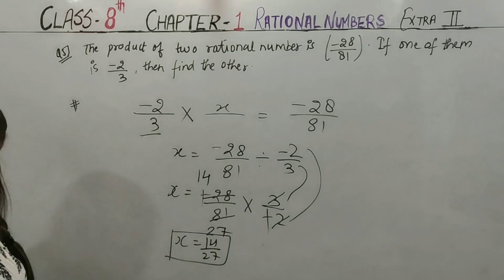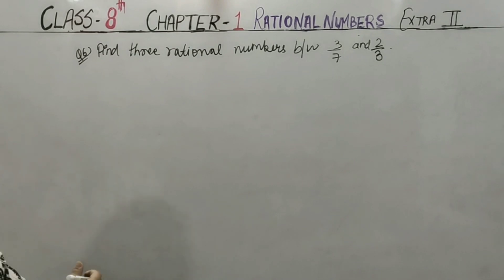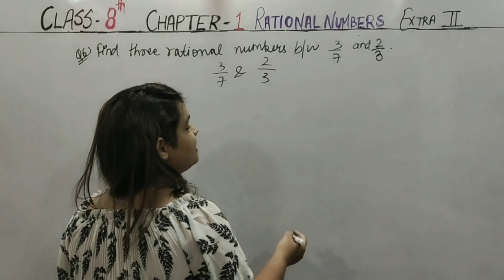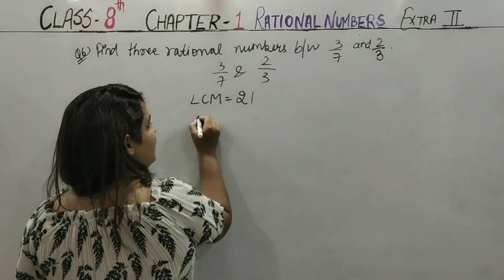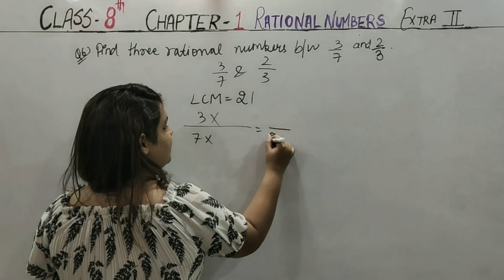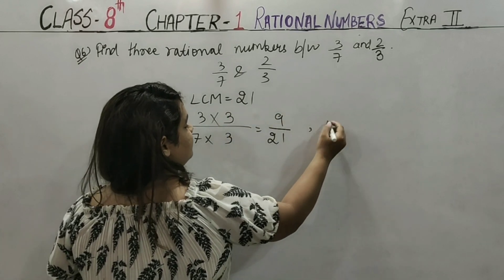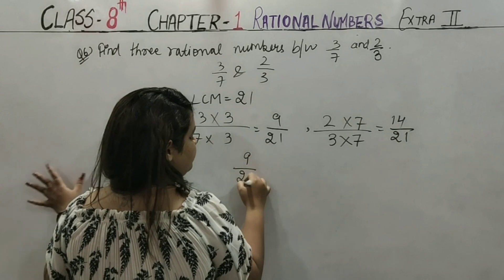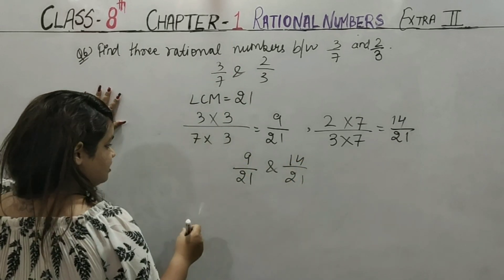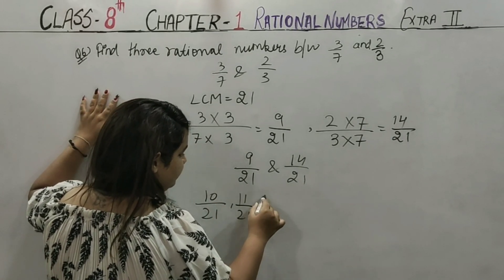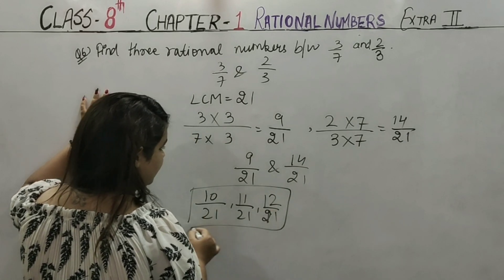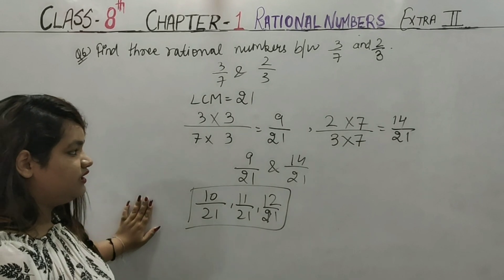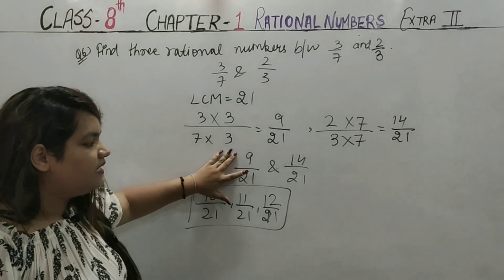Next question says: find 3 rational numbers between 3/7 and 2/3. First step: make the denominators the same. LCM of 7 and 3 is 21. For 3/7: multiply numerator and denominator by 3 → 9/21. For 2/3: multiply by 7 → 14/21. Now between 9/21 and 14/21, we need 3 rational numbers: 10/21, 11/21, 12/21. These are the 3 rational numbers between 3/7 and 2/3.